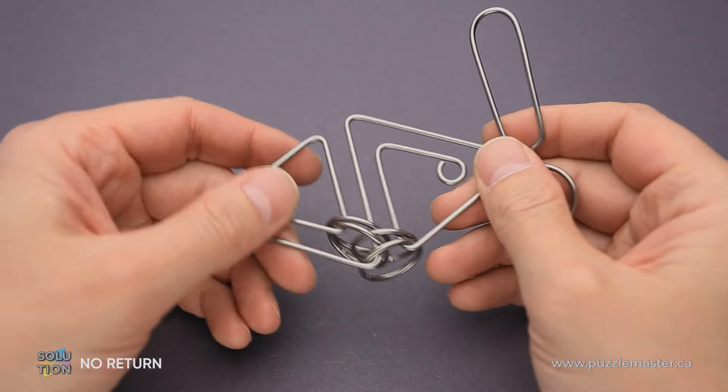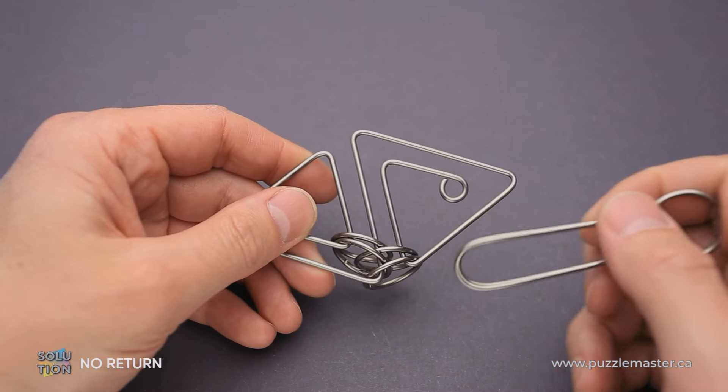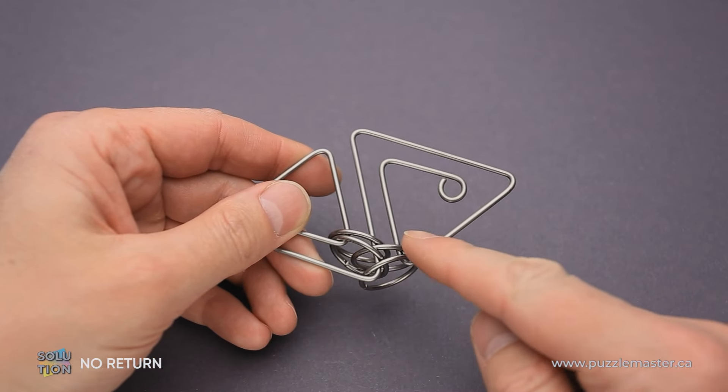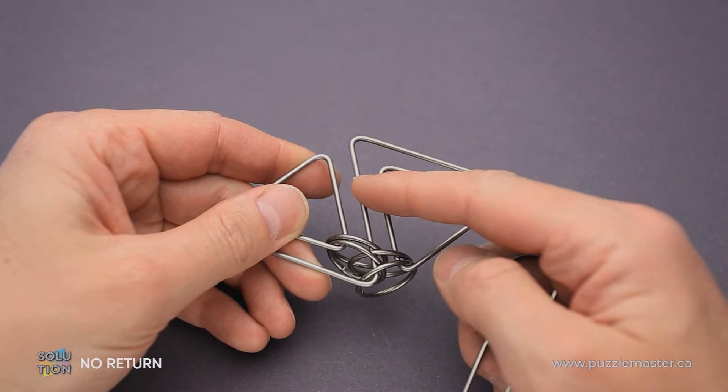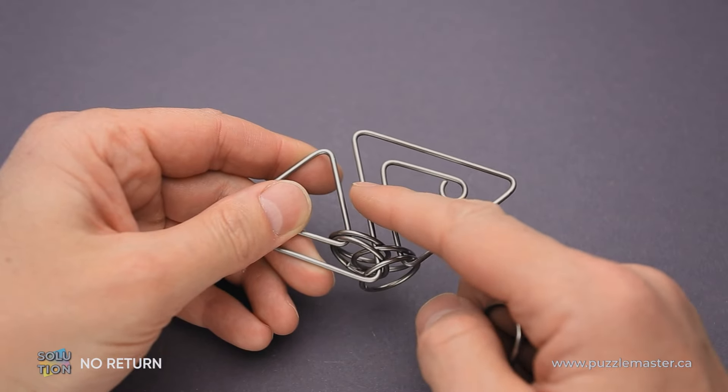And now I will show you how to solve the puzzle. First of all, I want to mention that there are four rings here. Two on the right, they are connected with these two wires and two on the left, they are connected with these two wires.